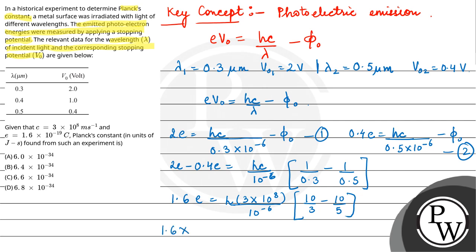So 1.6e is 1.6×10⁻¹⁹. And here if you cross multiply, 10⁻⁶ comes to the denominator: 3×10⁸.